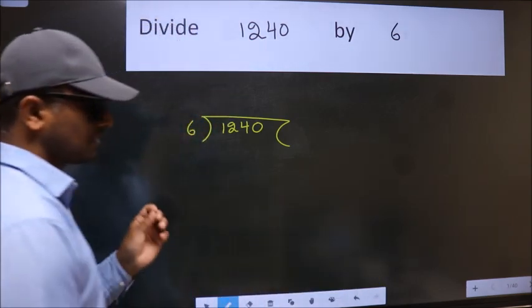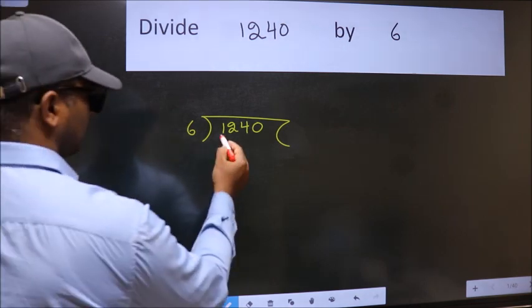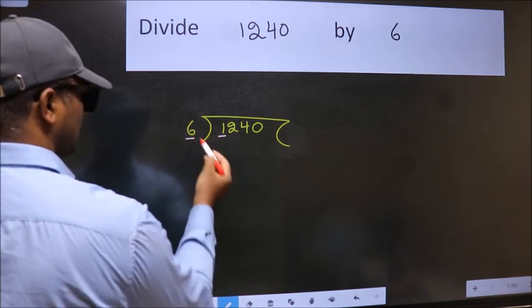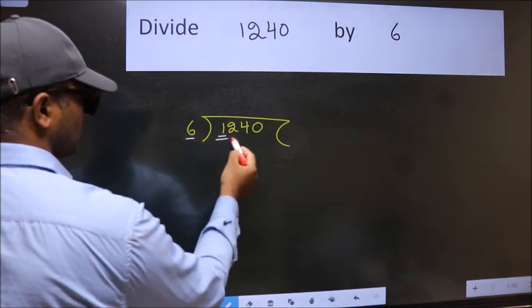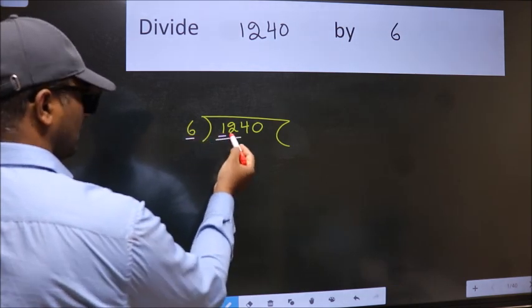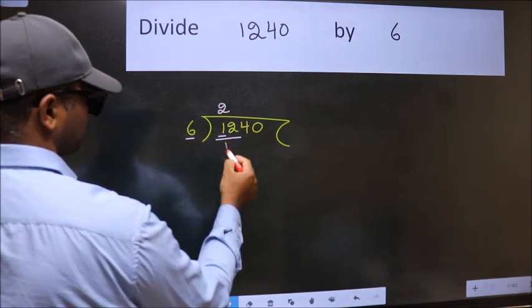This is your step 1. Next. Here we have 1 and here 6. 1 is smaller than 6. So we should take 2 numbers, 12. When do we get 12 in 6 table? 6 twos, 12.